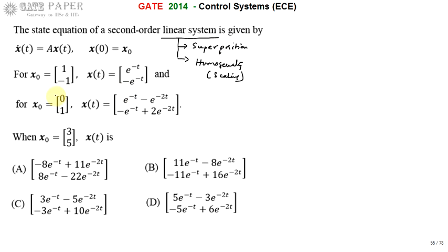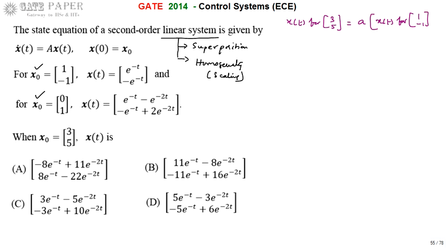Using these two principles, we consider [3, 5] as the input. The response x(t) for [3, 5] can be written as the sum: constant a times x(t) for [1, -1], plus b times x(t) for [0, 1].